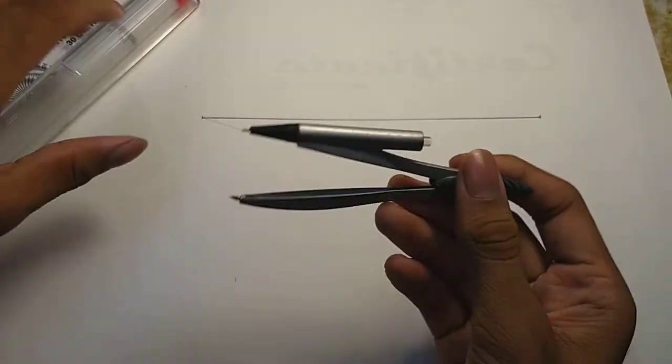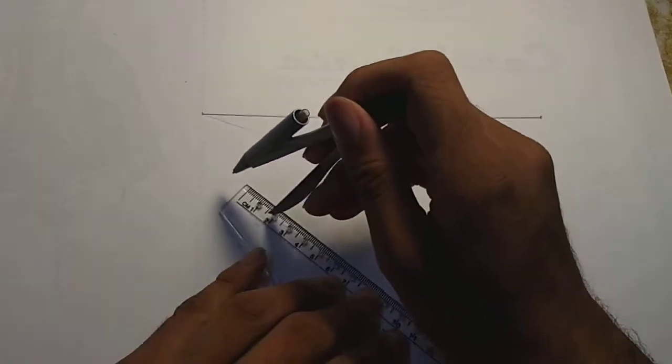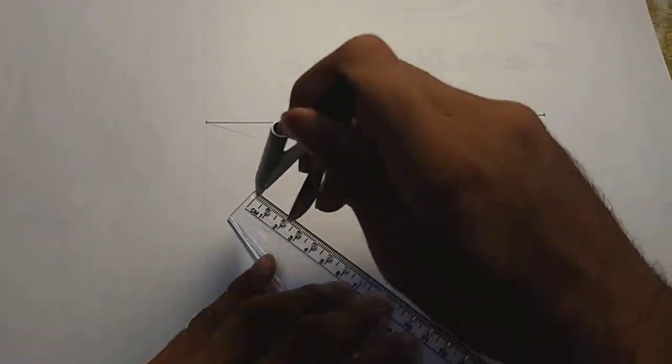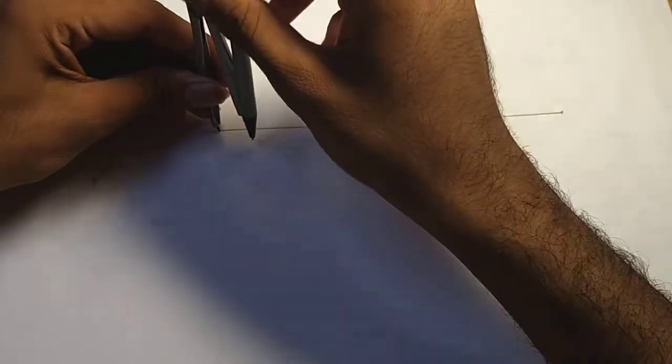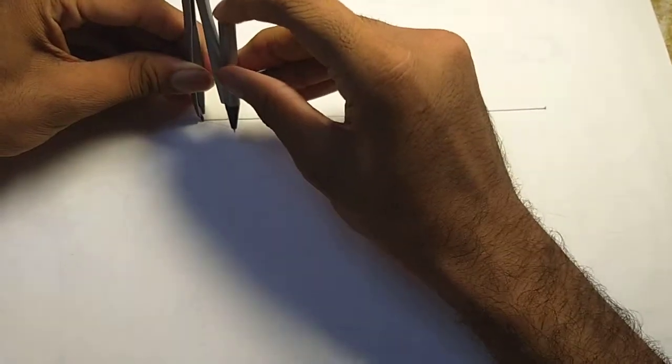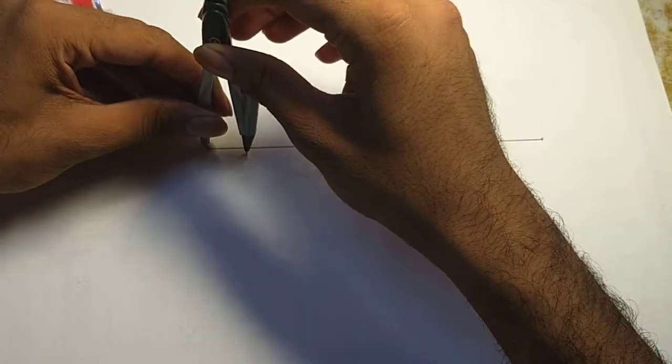Take your compass. Suppose I am taking two centimeters in my compass, and then keeping a point over here, mark the arcs.